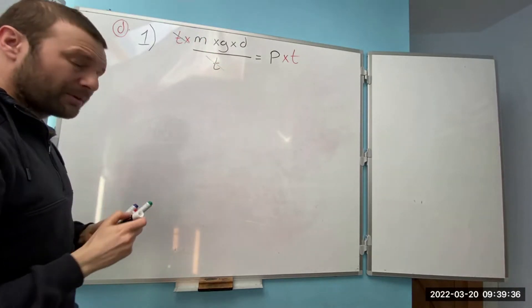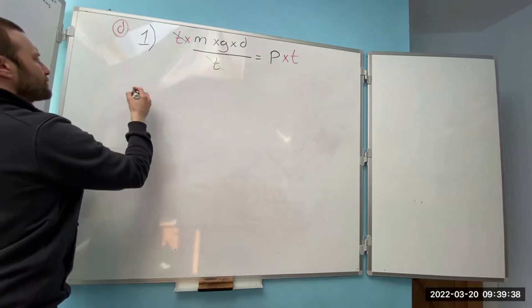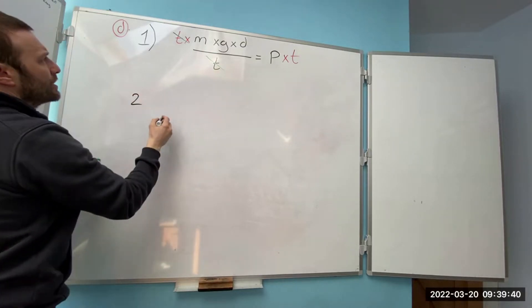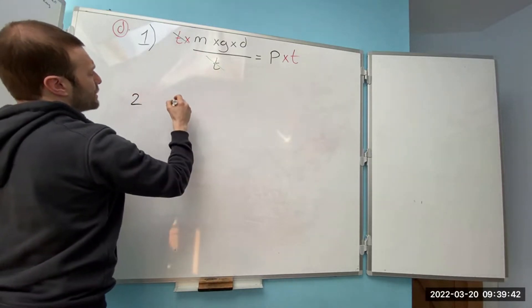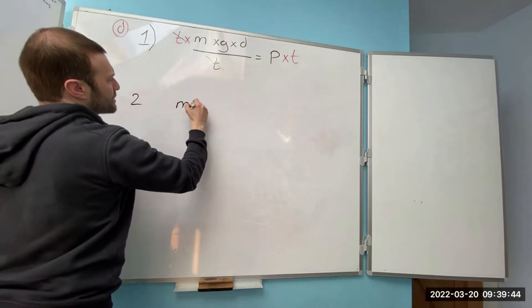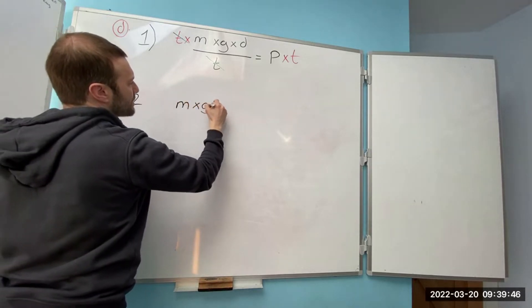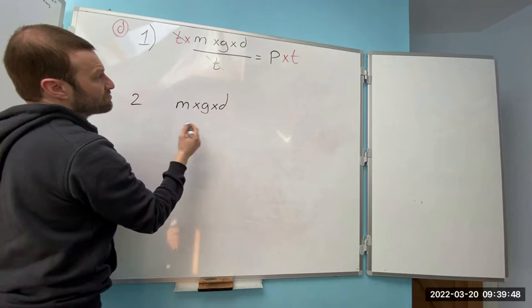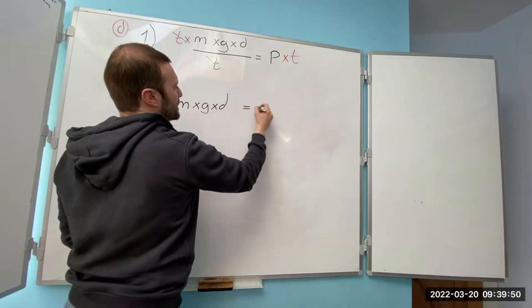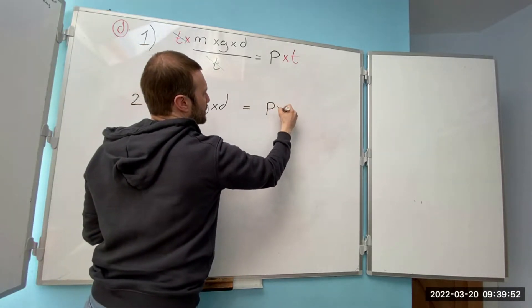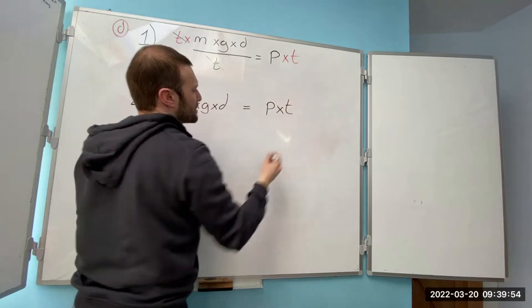So step two I'm going to clean up the formula. We've got mass times gravity times distance not divided by anything equals power times time.